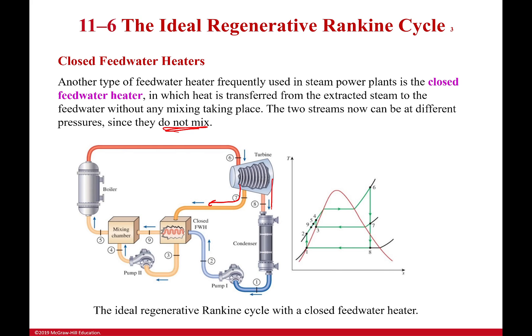The rest of the steam goes all the way through, produces as much power as possible, and goes into the condenser. In the closed feed water heater, the steam hopefully turns into a saturated liquid, and the compressed liquid also hopefully turns into a saturated liquid at those points. We then take these two streams — both now liquid — and mix them together before they go into the boiler. In doing this, we once again raise the average temperature at which we add heat, increasing our efficiency.